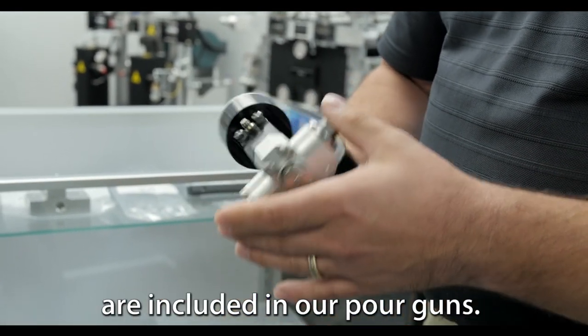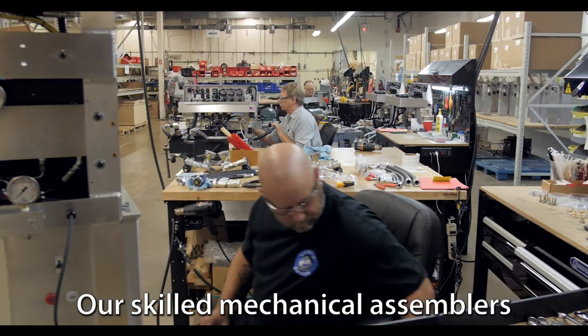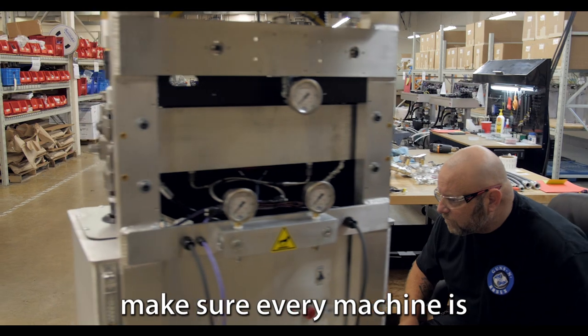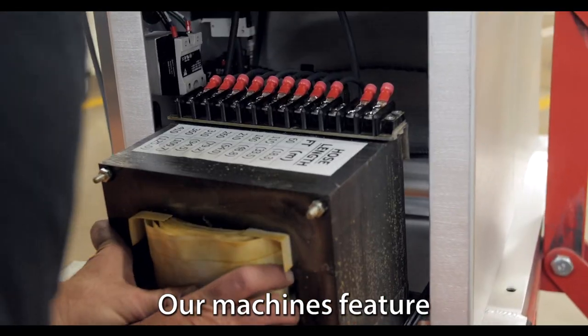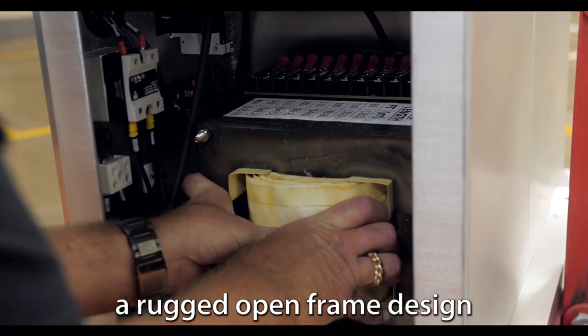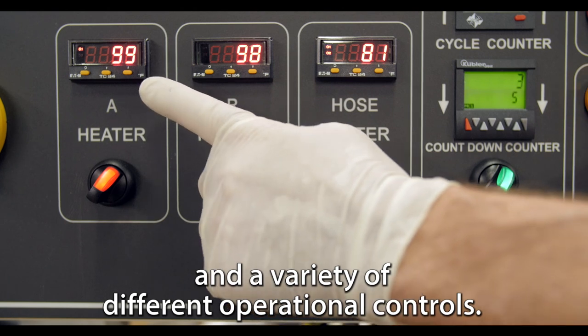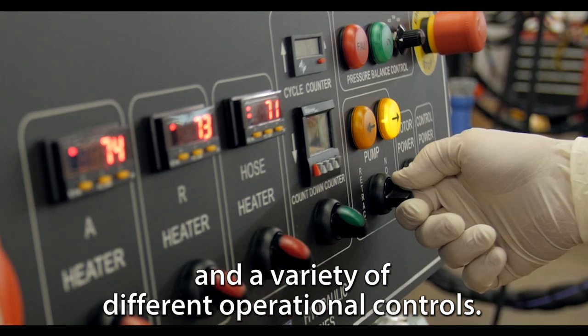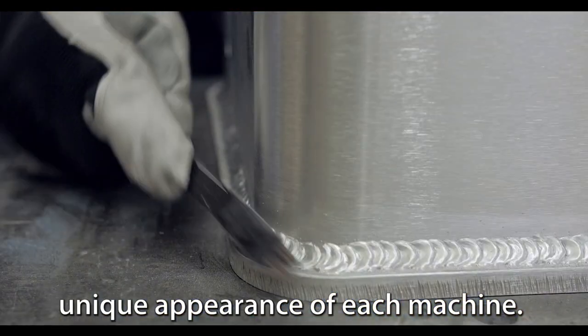The same quality features are included in our pour guns. Our skilled mechanical assemblers make sure every machine is made to spec and thoroughly tested prior to shipping. Our machines feature a rugged open frame design for easy serviceability and a variety of different operational controls. The frames are welded in-house and add to the overall unique appearance of each machine.